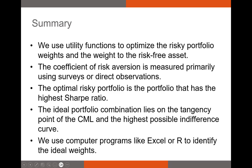To summarize: we talked about utility functions and we use them in the second step of MPT to optimize our risky portfolio weights and the weight to our risk-free asset. I also introduced the concept of the coefficient of risk aversion — our individual measure that we assign via surveys or direct conversation or observation, which is very difficult to assign, which is why most investors don't try to measure it. We talked about the optimal risky portfolio — the portfolio with the highest Sharpe ratio — and identified the ideal portfolio combination graphically, which lies at the tangency point with the capital market line. To optimize our portfolio in practice, we use Excel, Python, R, or some other package that identifies the ideal weights.